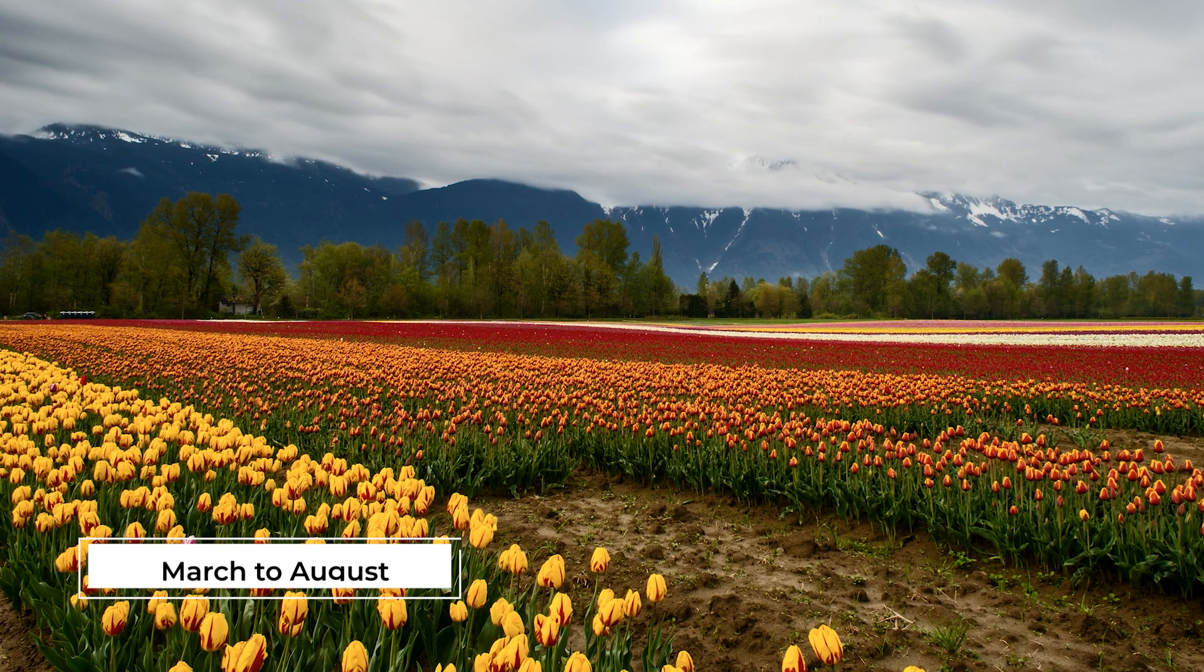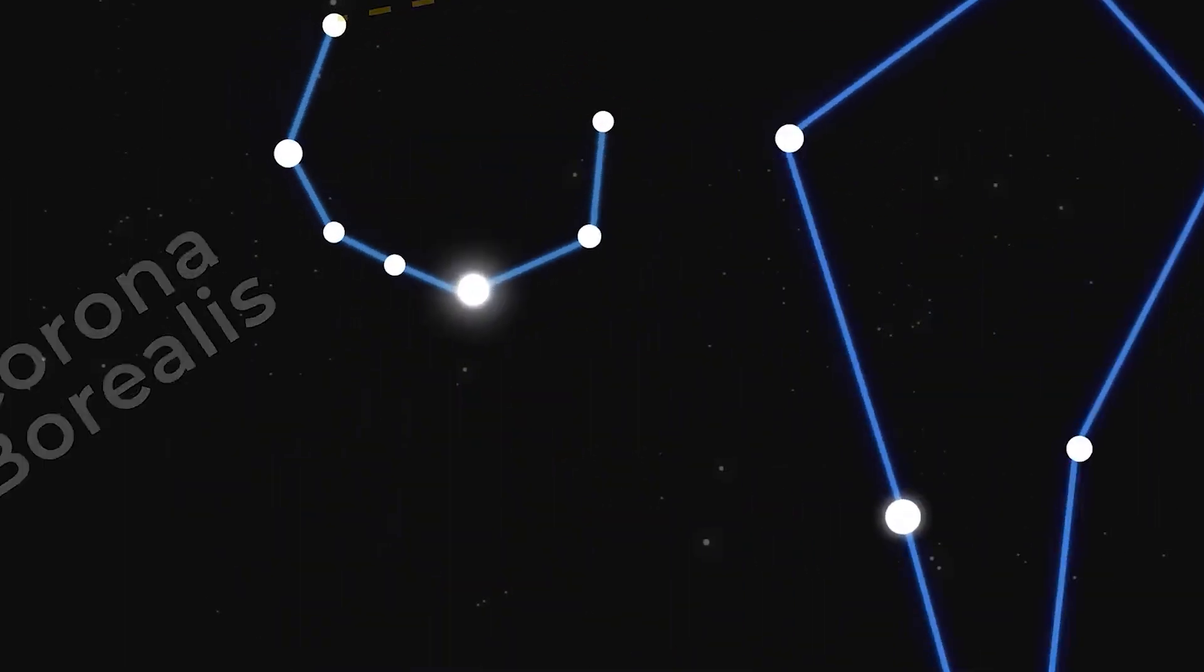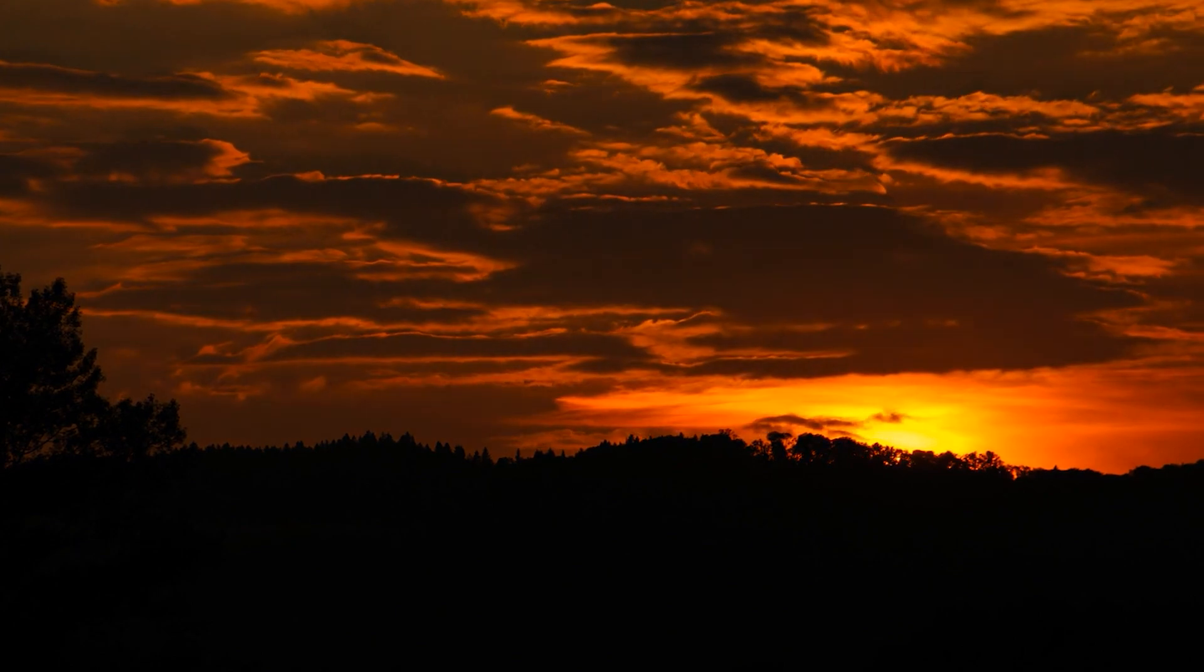The period from March to August is the best time to watch T Corona Borealis. The constellation is visible in both hemispheres, especially in the northern one, where it rises just after sunset and climbs higher each day.